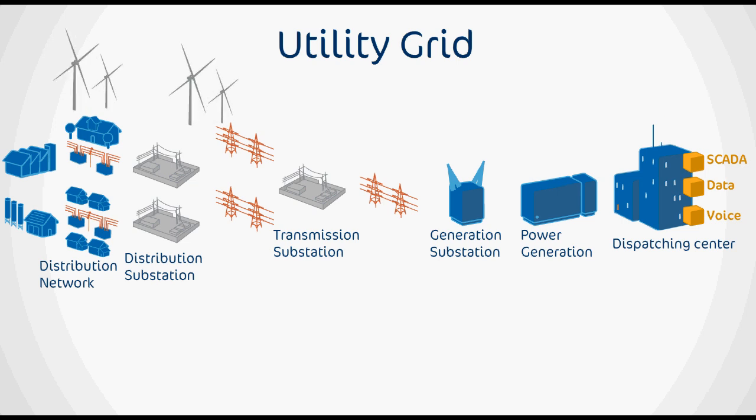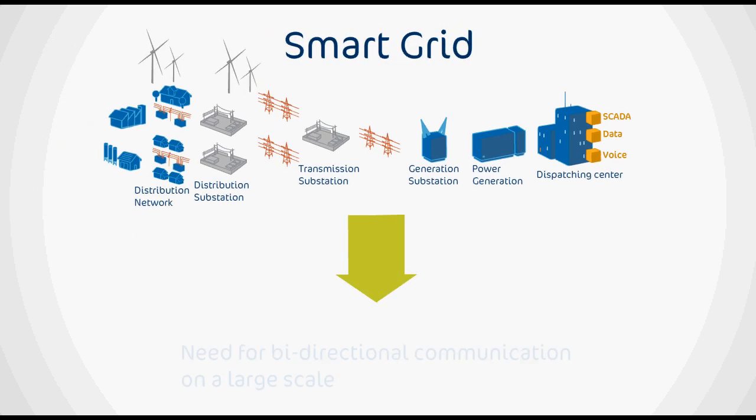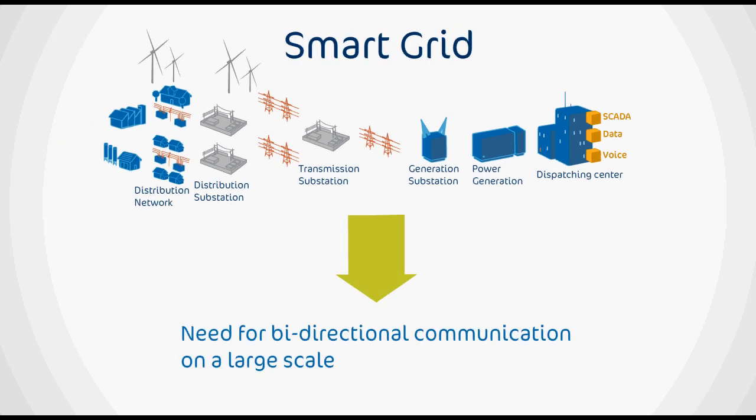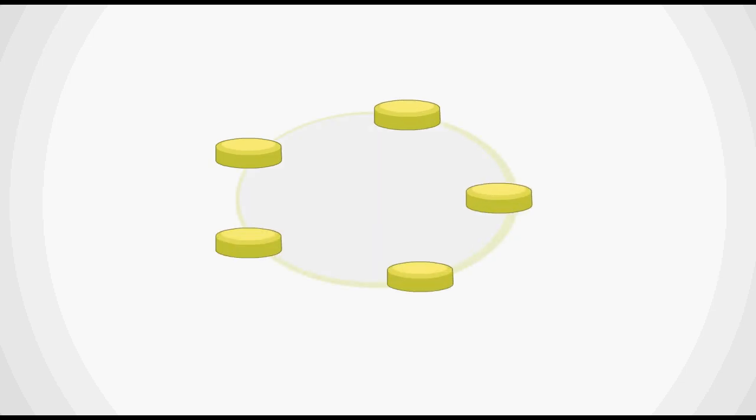While adapting the current grid to a smart grid, the need for bi-directional communication on a large scale becomes a must. Your communication network will look a lot like some of the networks that telcos operate.